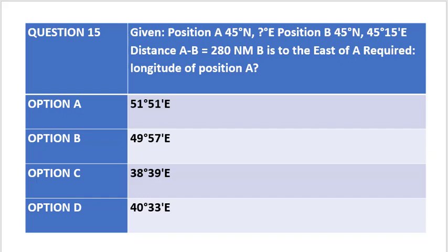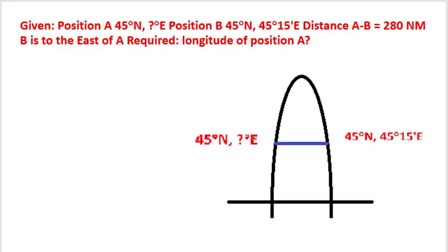...and position B which is 45 degrees north, 45 degrees 15 minutes east. Distance from A to B is 280 nautical miles. B is to the east of A. What is required is to find the longitude of A, and the options are as indicated below. To understand the question, let us look at this diagram.